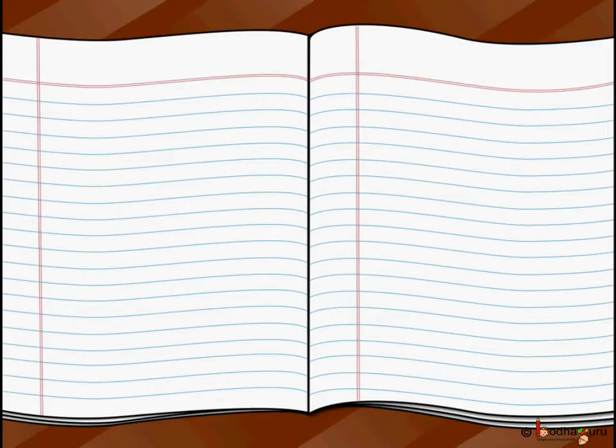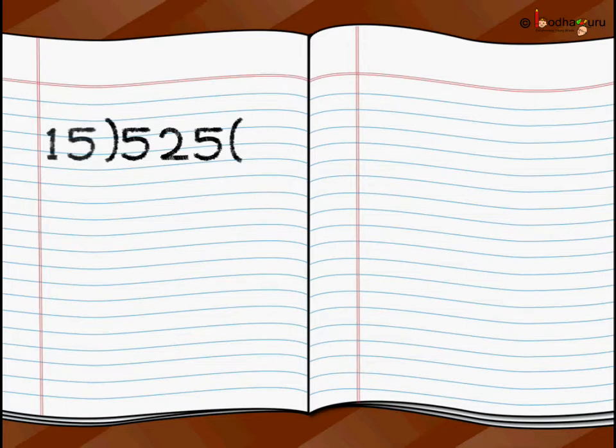We are going to do 525 divided by 15. So we write 525 which is the total amount of harvest which he had. Put a left and right bracket. We write 15 because we want to divide 525 divided by 15 and that will give us the number of bags required. As we are dividing with a two-digit number, that is 15,